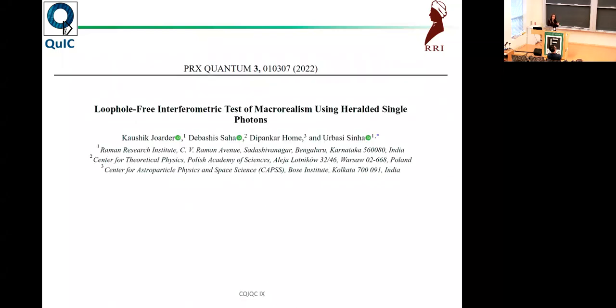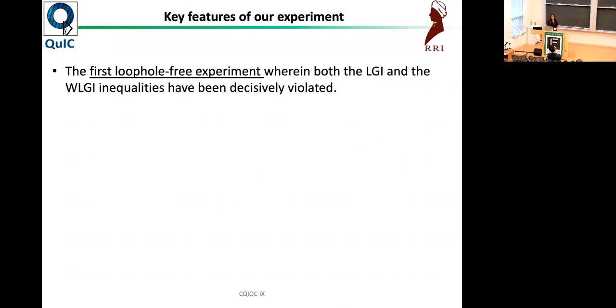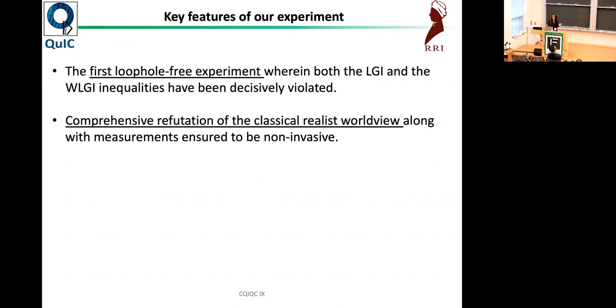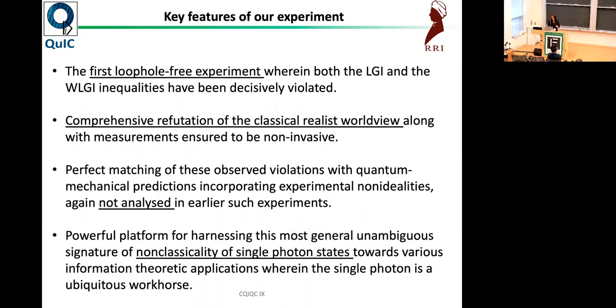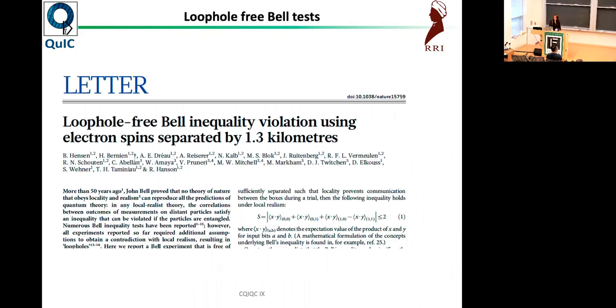Which brings us to our experiment, which is a loophole-free interferometric test of macro realism using heralded single photons. What are the key features? First, it is a loophole-free experiment where both the LGI and the WLGI inequalities have been decisively violated. It's a comprehensive reputation of the classical realist worldview. We have painstakingly assumed and verified that our experiment is non-invasive. Not only have we violated LGI, we have actually had a perfect match with quantum mechanics here. That is important because we have done this by taking into account all the non-idealities that affect the experiment and found the new quantum mechanical predictions and it matches very well with our experiment. We have a proof of non-classicality of single photon states, which can be used for various applications in information theory, in communications.